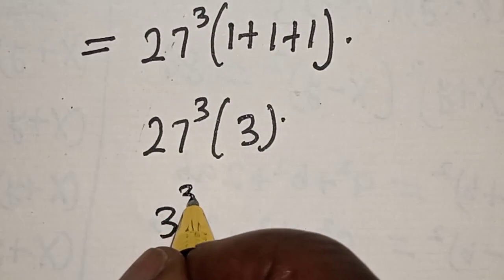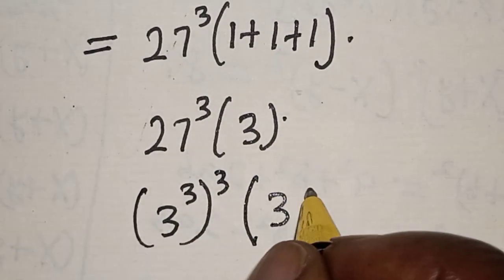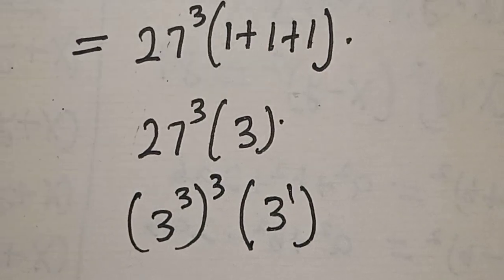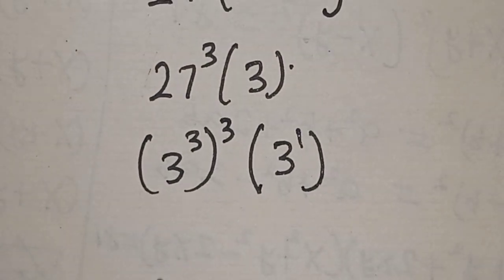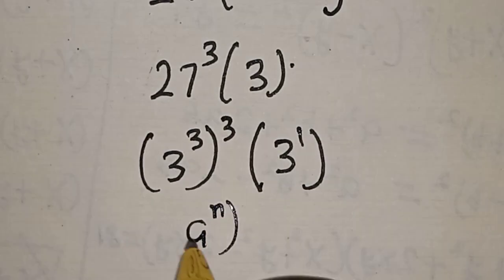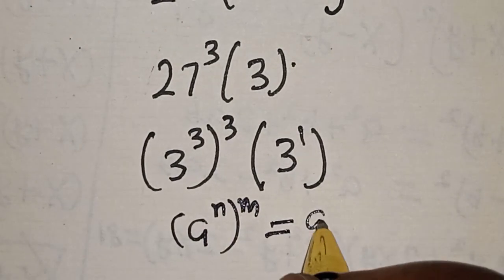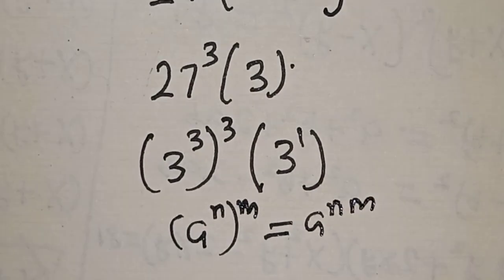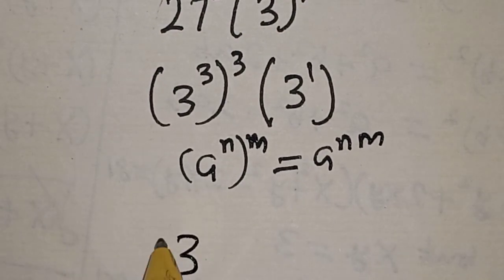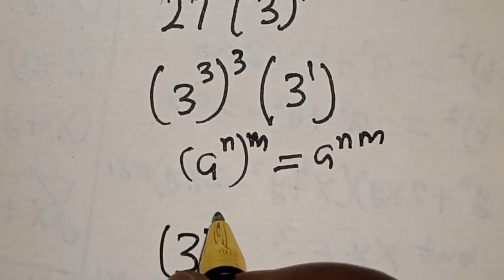Now 27 is 3 raised to power 3, so we have 3 raised to power 3, raised to power 3, multiplied by 3 raised to power 1. Remember this rule: if you have a raised to power n, raised to power m, it is equal to a raised to power n times m. So we have 3 raised to power 3 times 3, that is 9, multiplied by 3 raised to power 1.